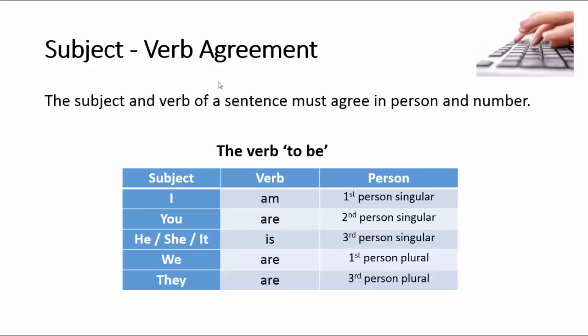Let's look at subject-verb agreement. The subject and verb of a sentence must agree in person and number. Here we have the subject down the left, the verb in the middle, and the person on the right.